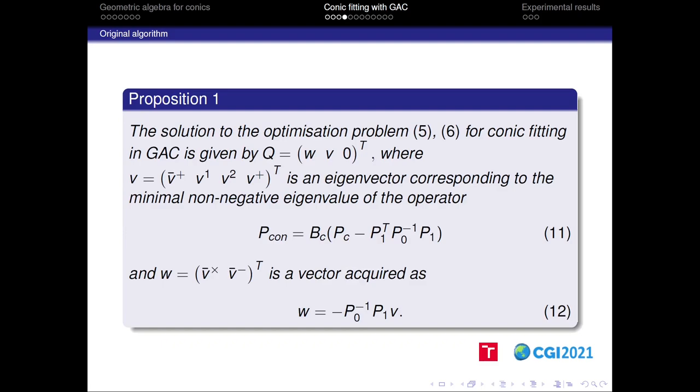In a way similar to the matrix Pc, we may denote the middle 4×4 part of matrix B as Bc. So we have this and this matrix coincides with the matrix of the inner product in CRA. Moreover, using this matrix Bc, we may reformulate the normalization constraint simply as this. Using all these reformulations and the decompositions of matrices, we may conclude the proposition 1 that states that the solution to our optimization problem for conic fitting in GAC is given by the conic Q of this form, where V is an eigenvector corresponding to the minimal non-negative eigenvalue of the operator Pcon.